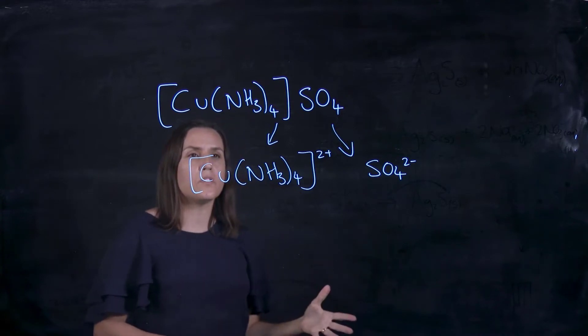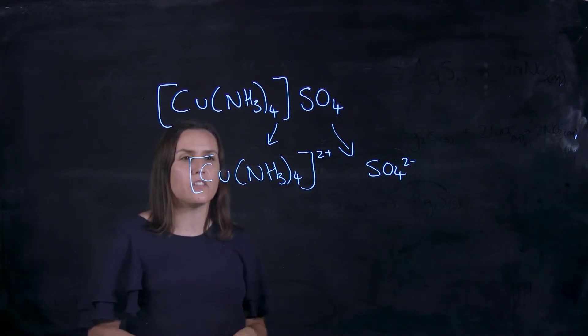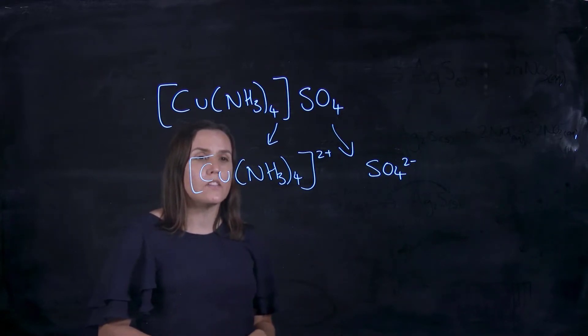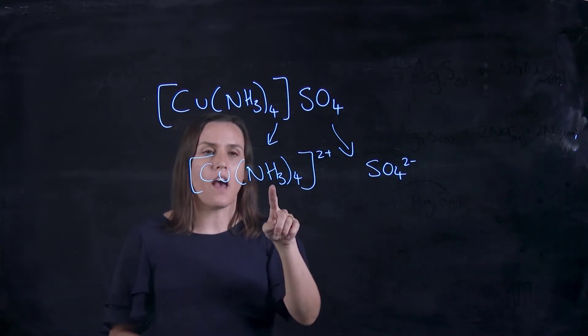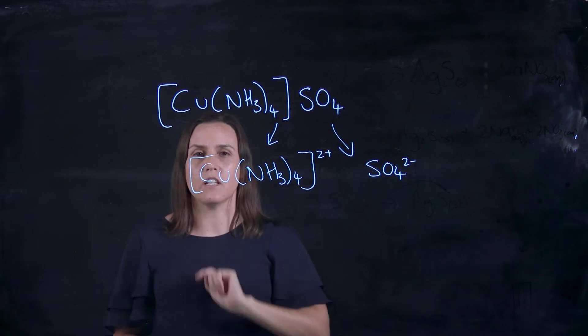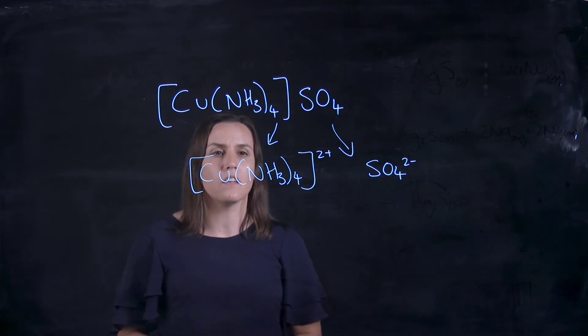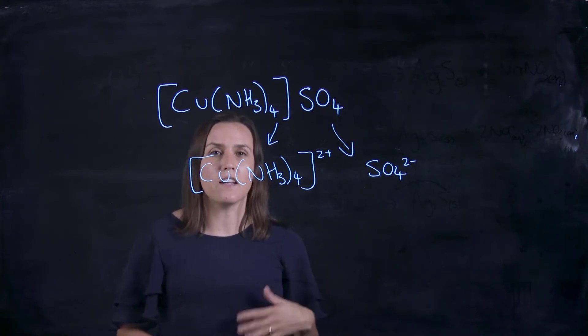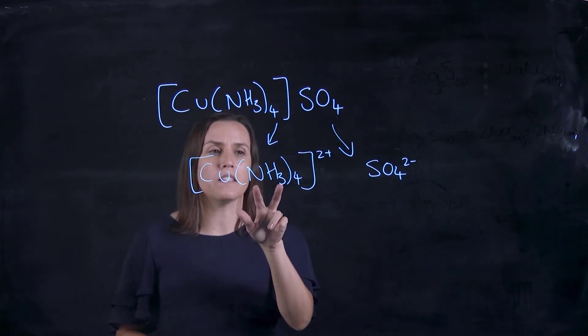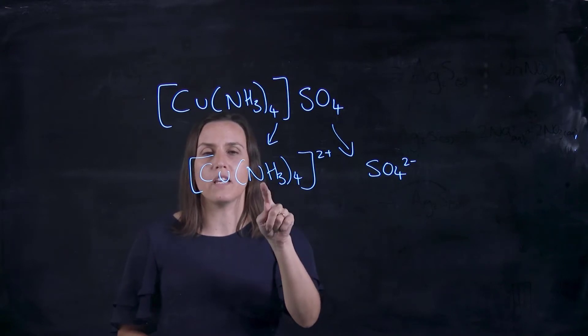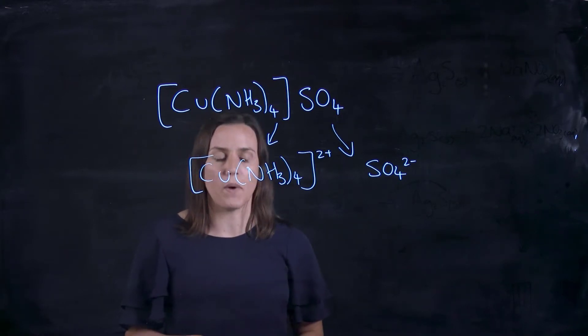Now the next thing we want to look at is the coordination number. So the coordination number is how many ligands are coordinating to the central metal that's there. So this NH3 is a monodentate ligand, so it's just coordinating one time into the ligand. You can have bidentate or polydentate ligands. So this one being monodentate means that there would be 4 of these coordinating into that copper.